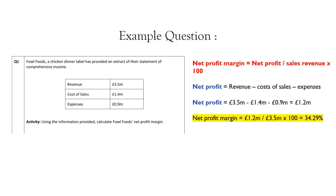An example of net profit margin. Foul Foods is a chicken dinner label, and they have provided an extract of their statement of comprehensive income. Using the information provided, calculate Foul Foods' net profit margin. The net profit margin is net profit divided by sales revenue times by 100. They haven't given us the net profit, so we work it out: revenue minus cost of sales minus expenses — that's £3.5 million minus £1.4 million minus £0.9 million, which gives us £1.2 million. So we do £1.2 million divided by £3.5 million times it by 100, giving a net profit margin of 34.29%.